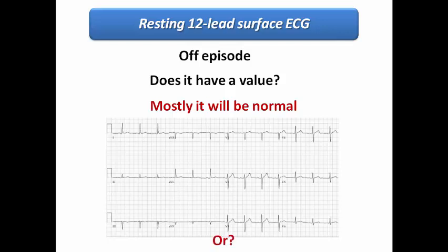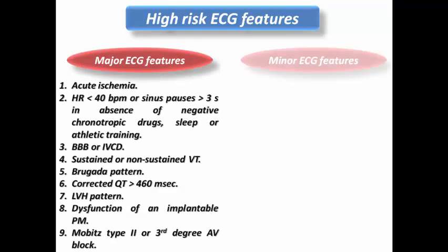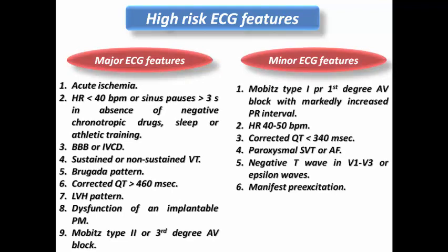But it may show another possibility. We are going to use the 2018 ACC guidelines for diagnosis and management of syncope as our reference today. This is a list of major and minor ECG features considered to be high risk if found during symptoms or while the patient is off symptoms. So give me an example of abnormality in ECG that may appear while the patient is off palpitation or blackout.